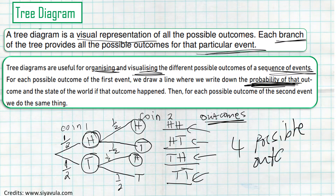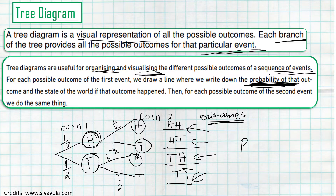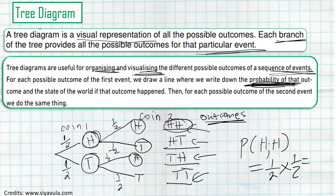If they ask what is the probability of getting head and head, you go to the head-head branch and multiply the two probabilities: one over two times one over two. That gives you your answer for the probability of that outcome.